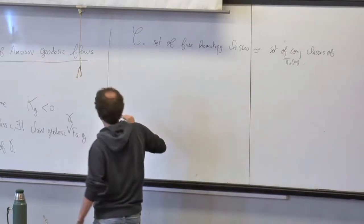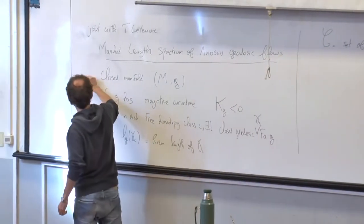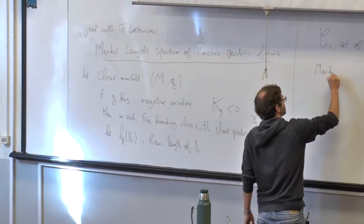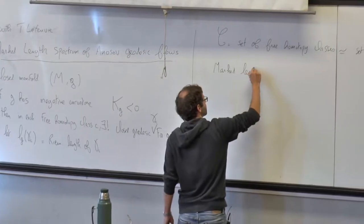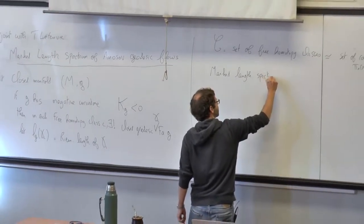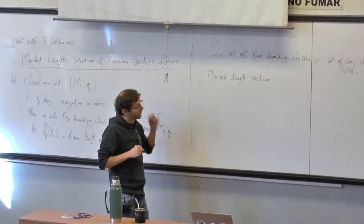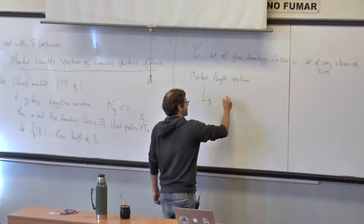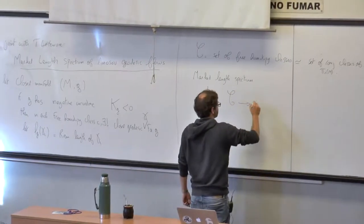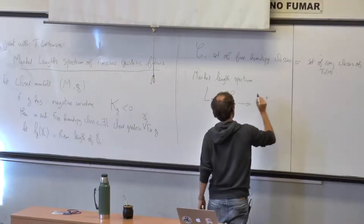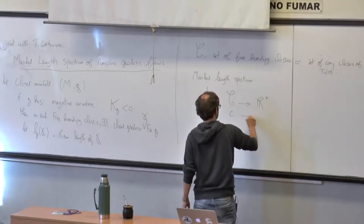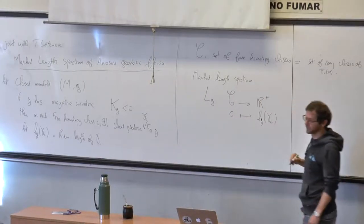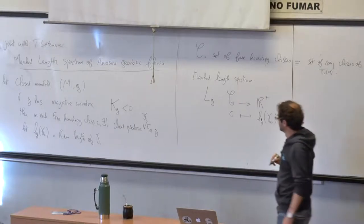The set of free homotopy classes can be identified with the set of conjugacy classes of the fundamental group. So we denote by C the set of free homotopy classes, which you can identify with the set of conjugacy classes of the fundamental group.